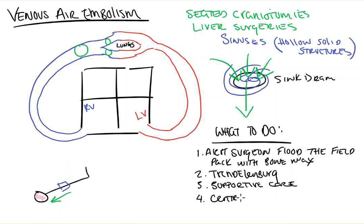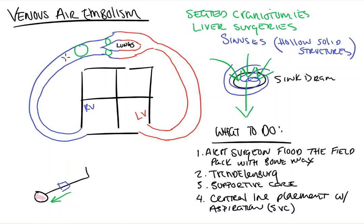The last-ditch effort is central line placement with aspiration. You're going to put a central line into the SVC and keep pulling back on it, giving the blood back to the patient, until hopefully you pull out a big pocket of air. As you pull blood out, the air bubble will get pulled back and eventually pulled right out of the heart and up into your syringe.